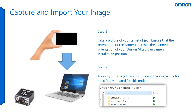First, take a picture of your target object. Ensure the orientation of the camera matches the planned orientation of your Omron Microscan camera installation position. This will ensure that you do not need to digitally manipulate the image at a later time.